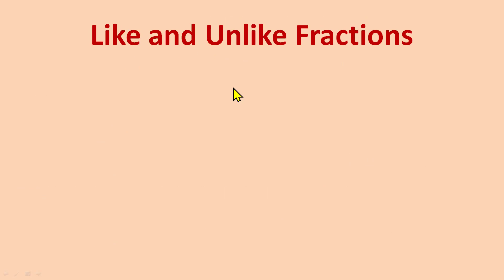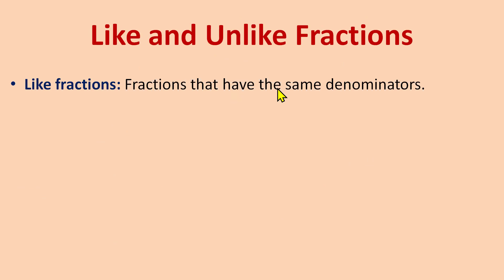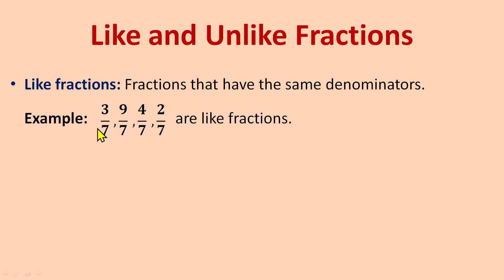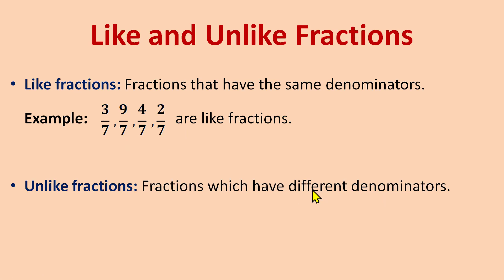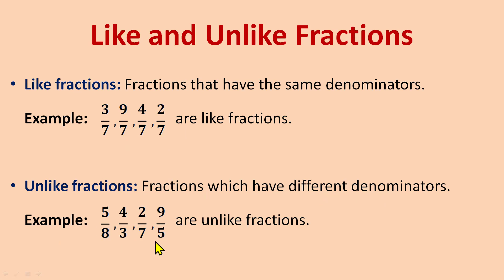Like fractions are fractions that have the same denominator. We only look at the denominators, not the numerators. For example, 3/7, 9/7, 4/7, and 2/7 are like fractions because all denominators are 7. Unlike fractions have different denominators. For example, 5/8, 4/3, 2/7, and 9/5 are unlike fractions because all the denominators are different.